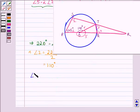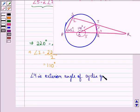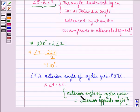Angle 4 is the exterior angle of cyclic quadrilateral PQTS. Therefore, angle 4 equals angle 2 because the exterior angle of a cyclic quadrilateral equals the interior opposite angle.